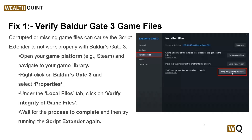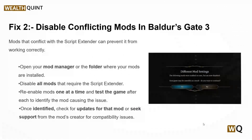To do this, simply open your game platform like Steam, navigate to the game library, then right-click on Baldur's Gate 3 and select Properties. After that, under the Local Files tab, click on Verify Integrity of Game Files, then wait for the process to complete and try running the script extender again.